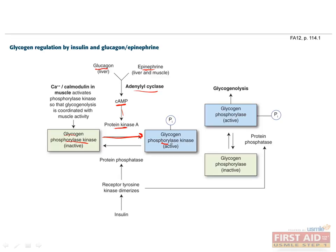Glycogen phosphorylase kinase can then phosphorylate glycogen phosphorylase, which also activates it. The role of glycogen phosphorylase is to break down glycogen into glucose via a process called glycogenolysis, which increases blood glucose to address the fact that you're in an unfed or hypoglycemic state.